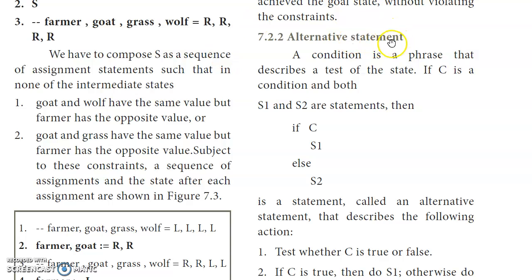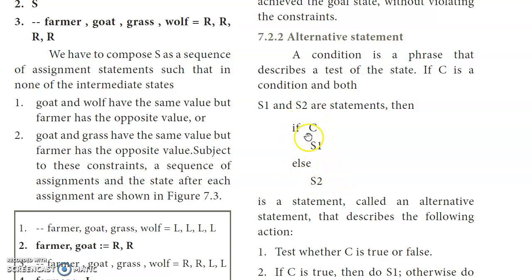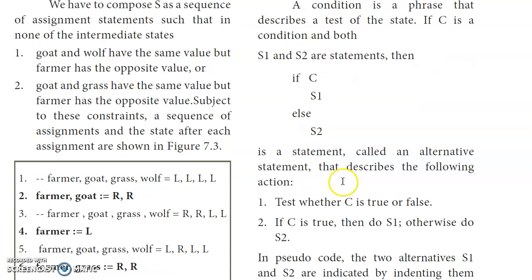In alternative statements, there will be a condition. The condition is checked — if it is true, one part executes; if it is false, another part executes. This is called a test of the state. If C is the condition, then if C is true, S1 executes; else S2 executes. The condition C is checked first — if true, control flows to S1; if false, control flows to S2. This is the alternative statement structure.